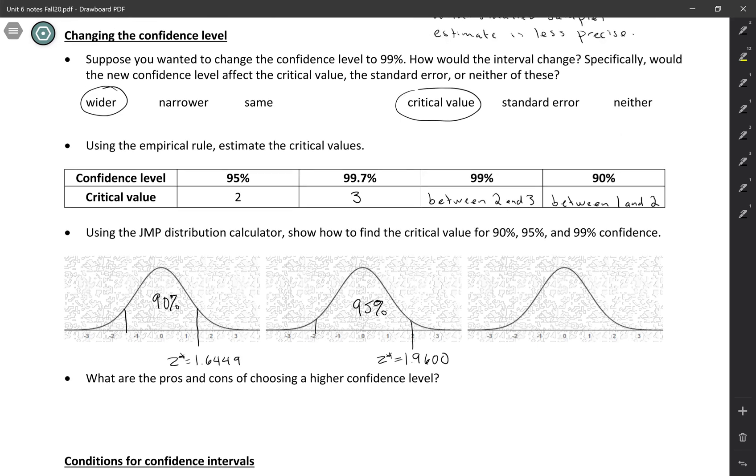And just to make sure you know how to use the distribution calculator, I'm going to let you calculate the one for 99% confidence. So go ahead, pause the video and get Z star for 99%.